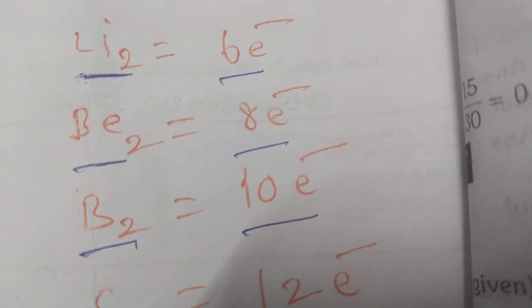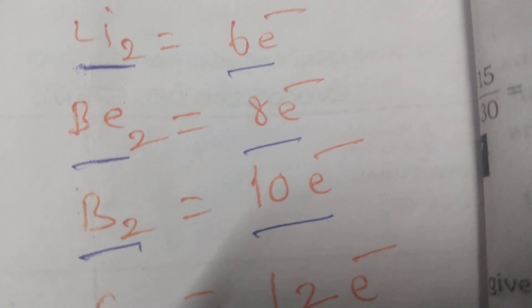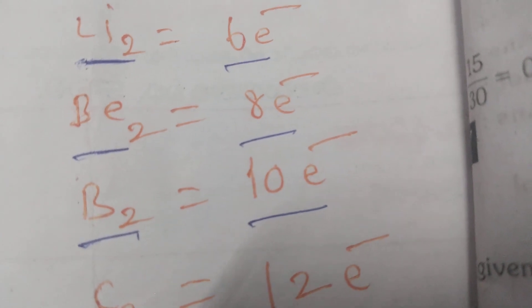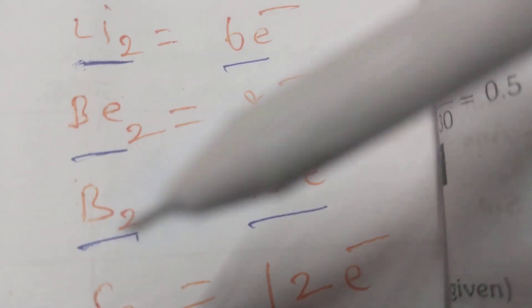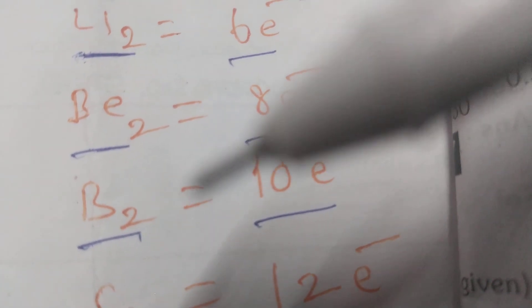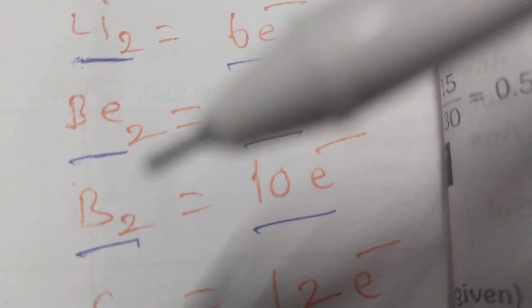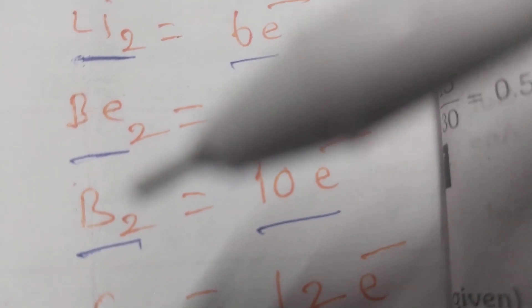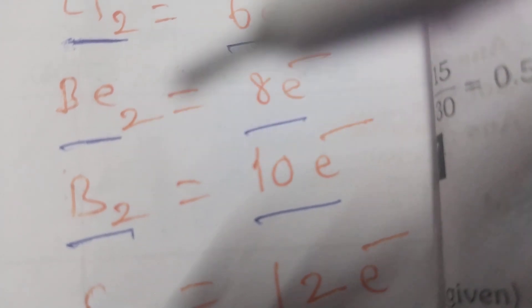If you apply molecular orbital energy diagram mode, then definitely you will be able to know. Apply bonding electrons, anti-bonding electrons.